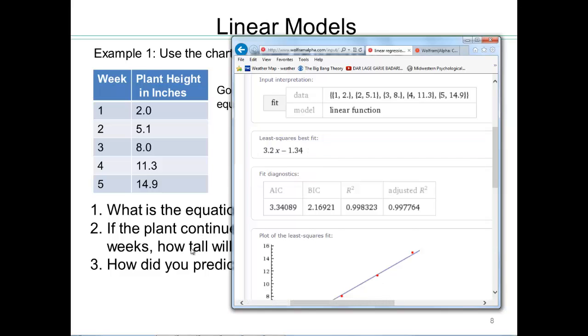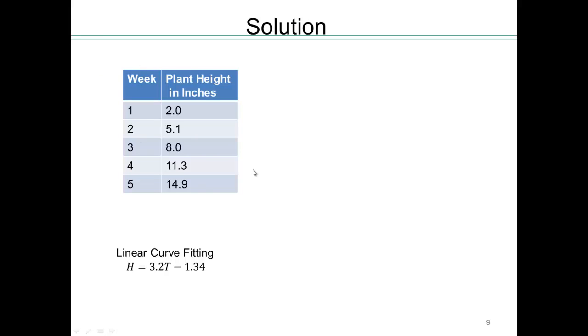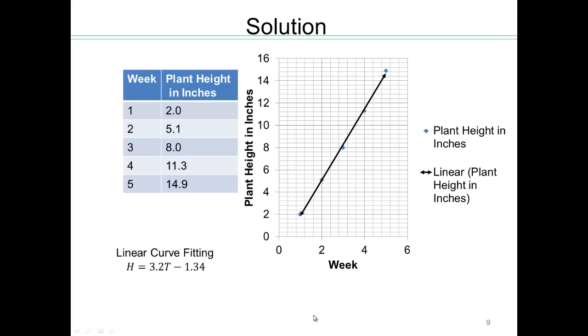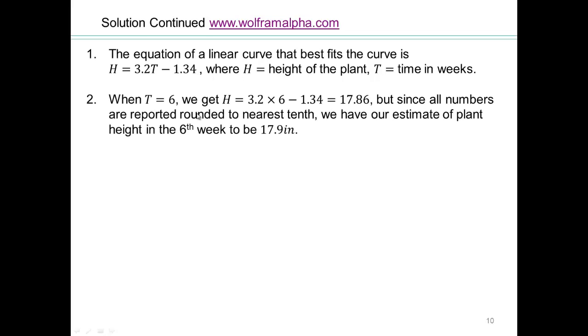So using this equation now, we can answer some of these questions. So let's go back to our original problem, and here's the solution then. So here was the data, we'll say h is our plant height, and t is the time in weeks that have passed. This graph was produced using Excel. So you can also enter these points in Excel and plot the regression line here. All right, let's answer questions now using this equation. So our equation was h equals 3.2t minus 1.34. h is the height, t is the time. That was the first question.